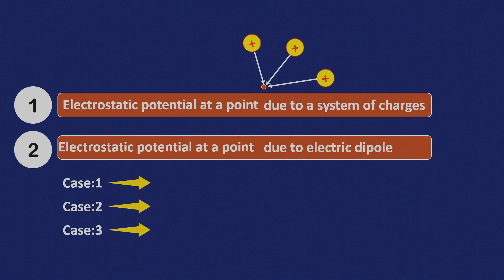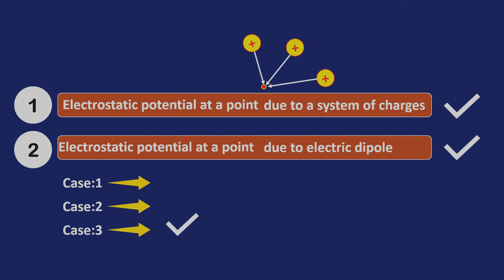If you are interested in understanding the basics of a dipole, you can find a link in the description box. The first topic is very important because it will help us better understand electric potential due to a dipole, most importantly the last case of the electric dipole. Before we proceed further, let's take a few formulas that we derived in the previous video which are going to be helpful in this video.